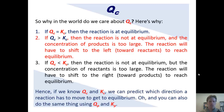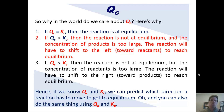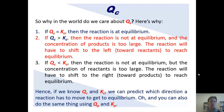So the point is, if we know QC and we know KC, then we can predict which direction a particular reaction has to move or shift in order to reach equilibrium. And you can also do the same thing using QP and KP.